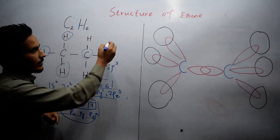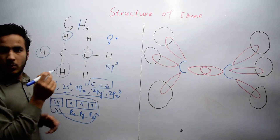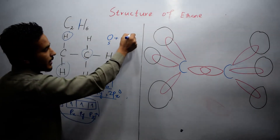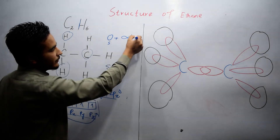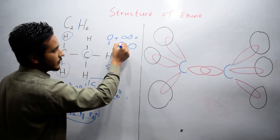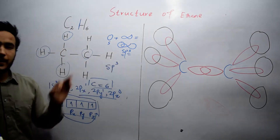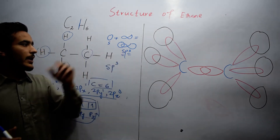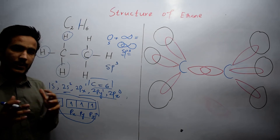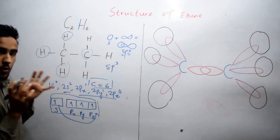So basically what happened is that one s orbital combined with the p orbitals and they formed sp3 hybrid orbitals, which have 25% characteristics of the s orbital and 75% characteristics of the p orbital. In this way, carbon can now form four bonds.